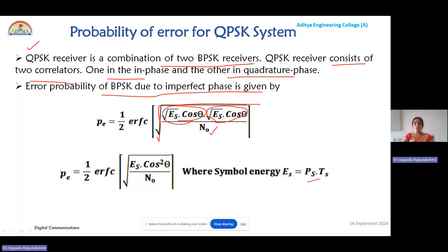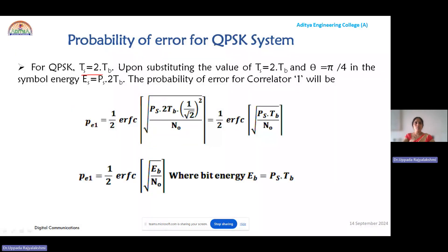In QPSK, symbol duration Ts = 2Tb since two bits are grouped per symbol. Substituting Ts = 2Tb and cos(π/4) = 1/√2, we get cos²(π/4) = 1/2. The factor of 2 from Ts and 1/2 from cos² cancel, giving the probability of error for correlator 1 as half ERFC of √(Eb/N₀).